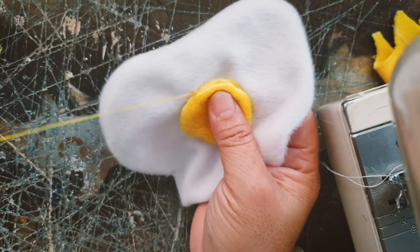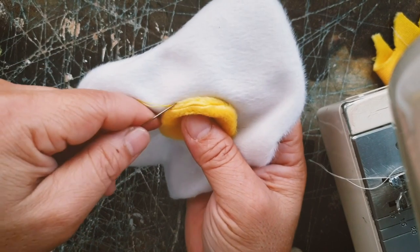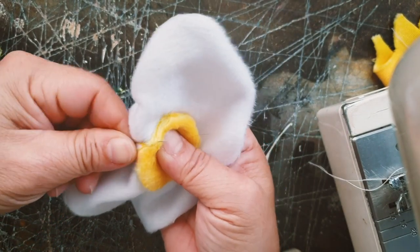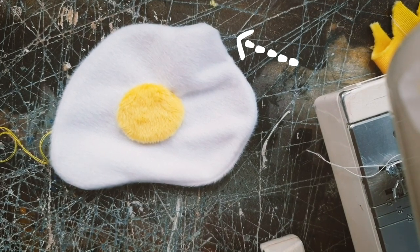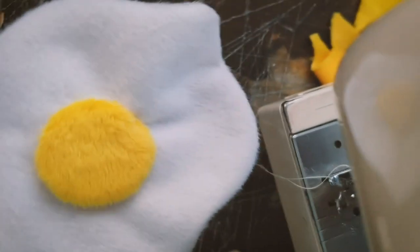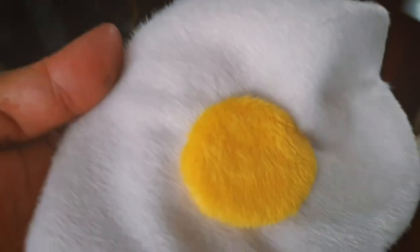Now we just hand stitch the egg yolk onto the egg whites with matching thread. We don't have to worry about that gap there. We just bring it over to the blanket and arrange the egg into a pattern that you like.